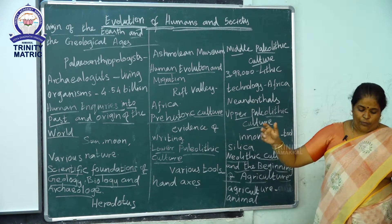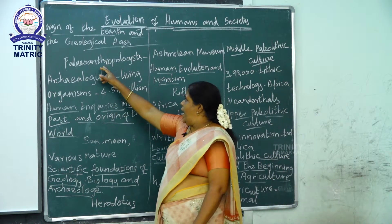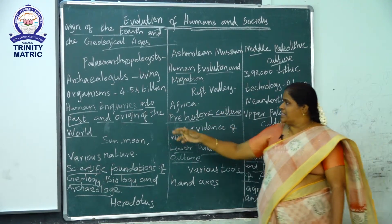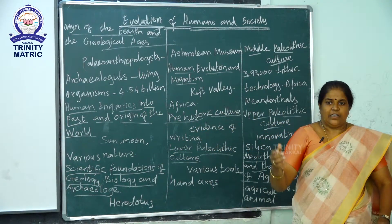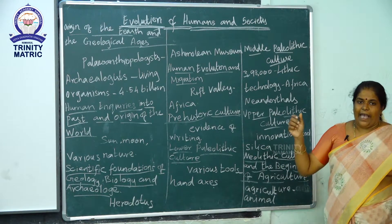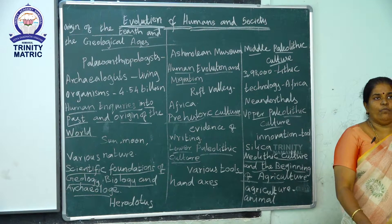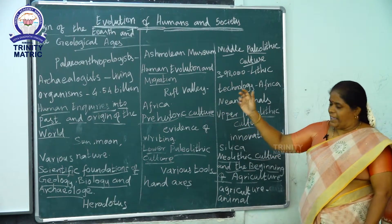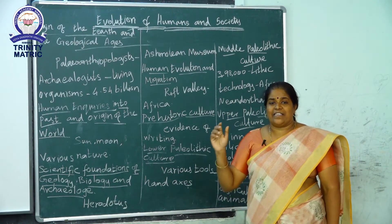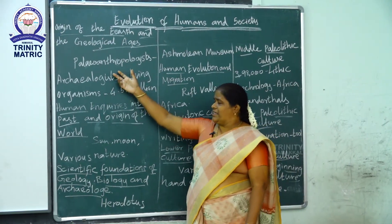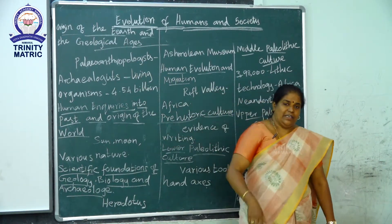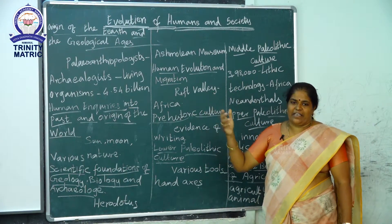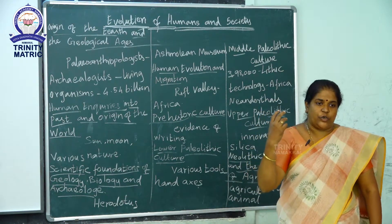Two important terms here: paleoanthropologist and archaeologist. These provide human evidence from the prehistoric period. A paleoanthropologist is one who studies human ancestors — grandfather, father — that is called ancestors. So paleoanthropology gives us evidence about human ancestors.